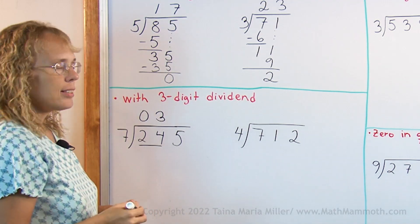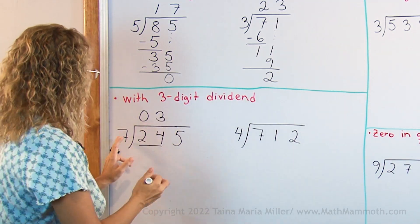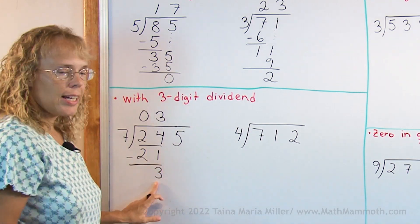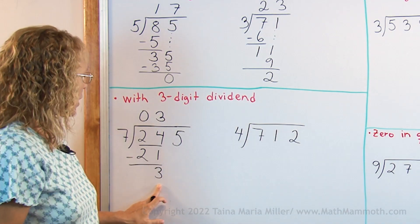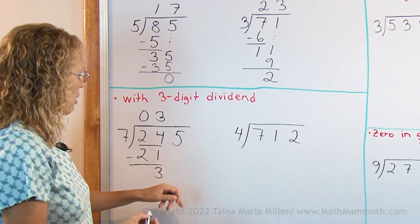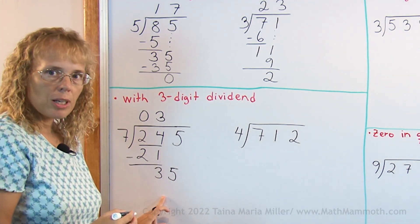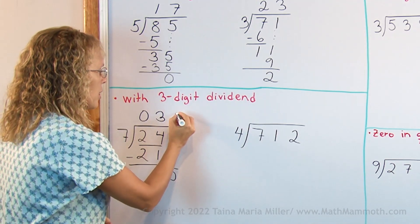Now in the tens, we find the remainder. 3 times 7, 21. Subtract. We have 3 tens as a remainder. And now we drop down this digit, 5 here. And think, 7 goes into 35 how many times? 5 times. And that's an exact division.